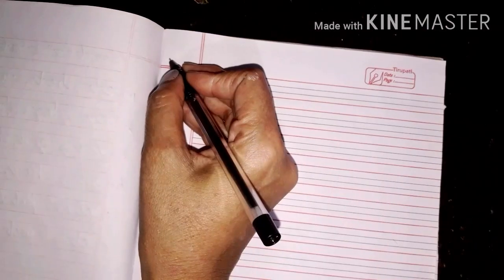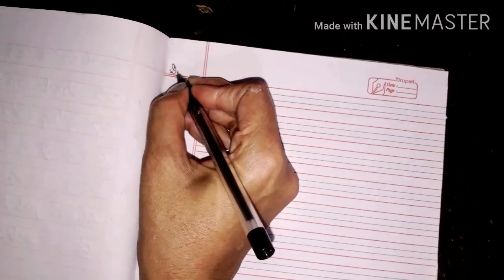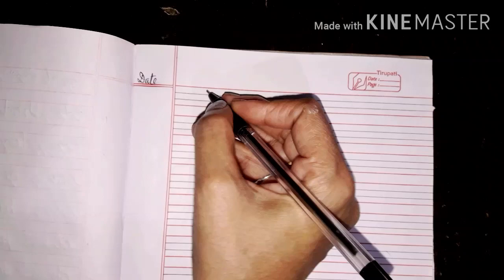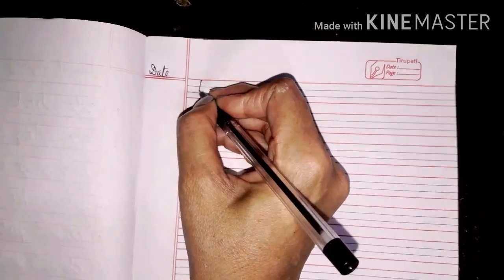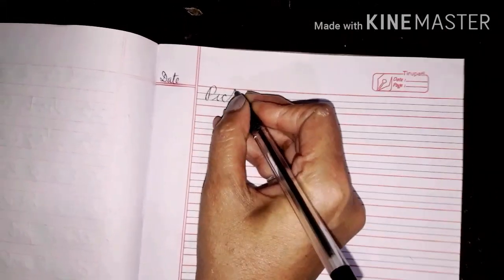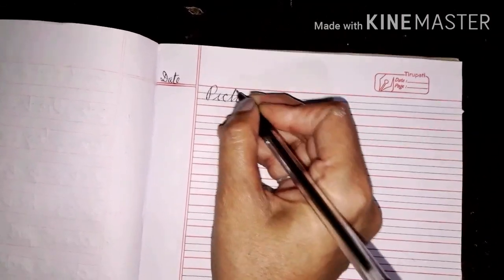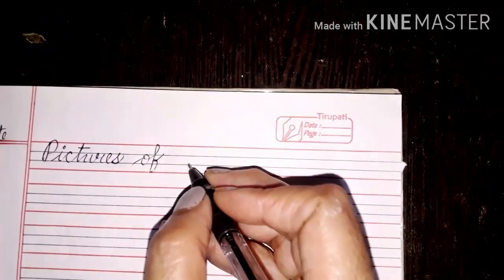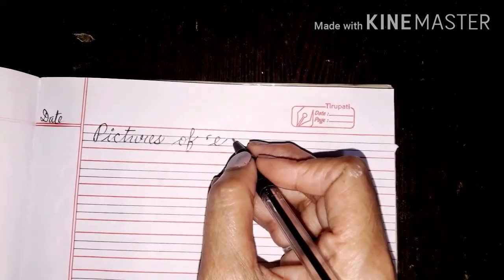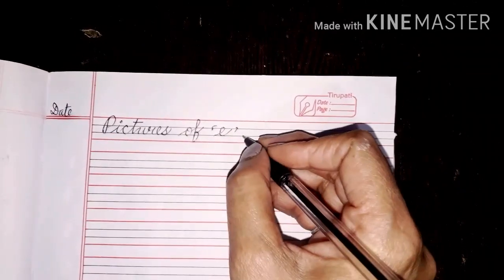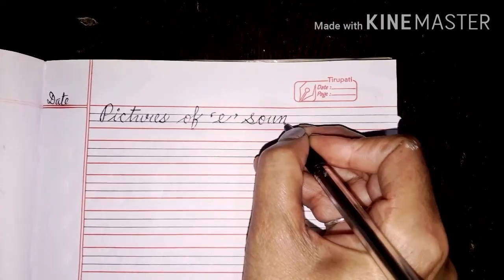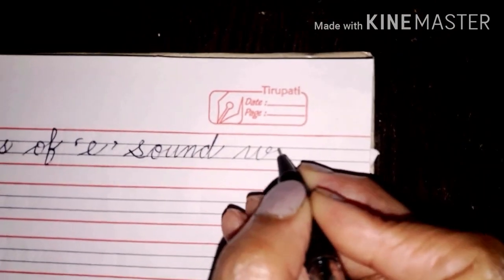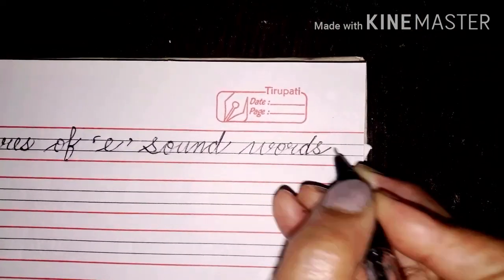So firstly you have to write down date with the pencil. After writing the date you will start writing the heading. P I C T U R E S pictures. O F of inverted comma E. E says A. Sound S O U N D sound. W O R D S words.